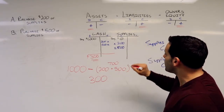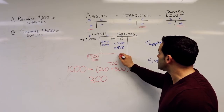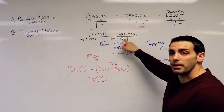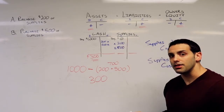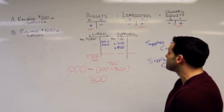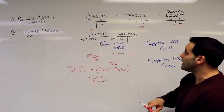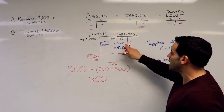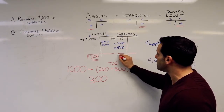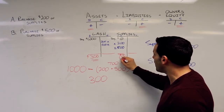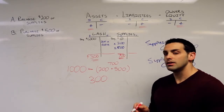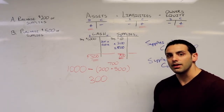Supplies are a little bit easier. I started with a zero balance, so I needed to buy some supplies. I increased my supplies by $200 and $500, so I'm going to have an ending $700 debit supply balance.